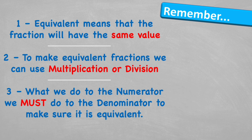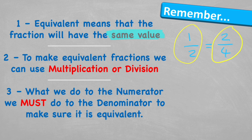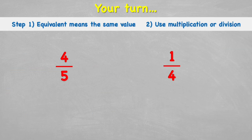Here's what to remember: equivalent means the fraction will have the same value. For example, one half has the same value as two quarters — if someone offered you one half of a pizza or two quarters, it doesn't matter because it is the same amount, just looking different. To make equivalent fractions, use multiplication or division, but remember: whatever you do to the numerator you must do to the denominator.